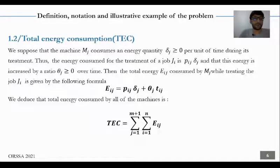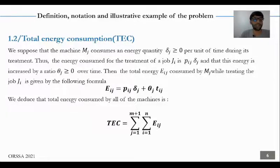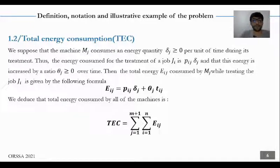In this slide, we present the total energy consumption. We suppose that machine M_j consumes an energy quantity per unit of time during its treatment. Thus, the energy consumed for the treatment of job J_i is P_ij times delta_j, and this energy is increased by a ratio over time. The total energy consumed by M_j while treating job J_i is given by the following formula. And we deduce, finally, that the total energy consumed by all machines is given by the formula shown.